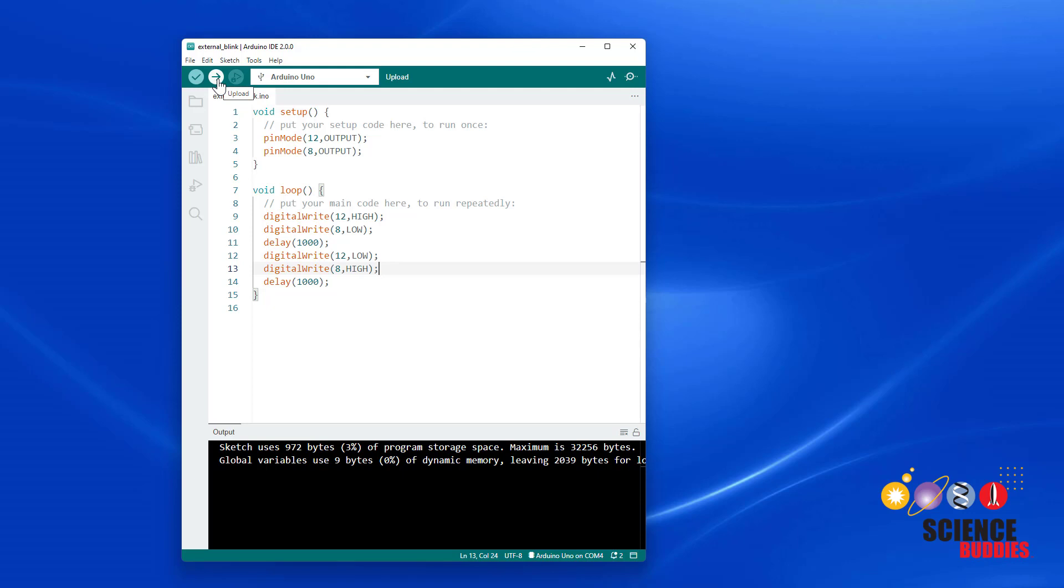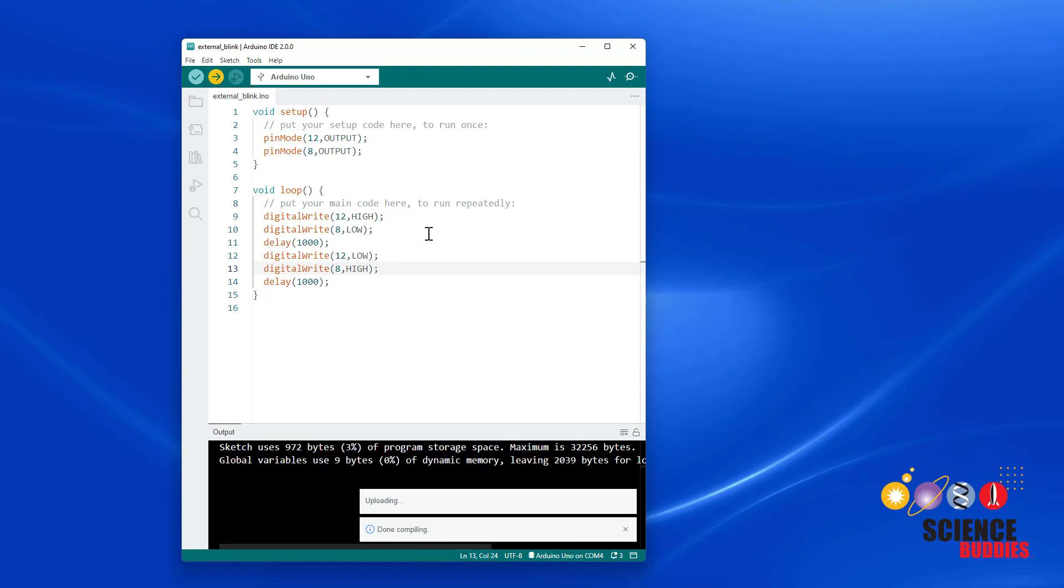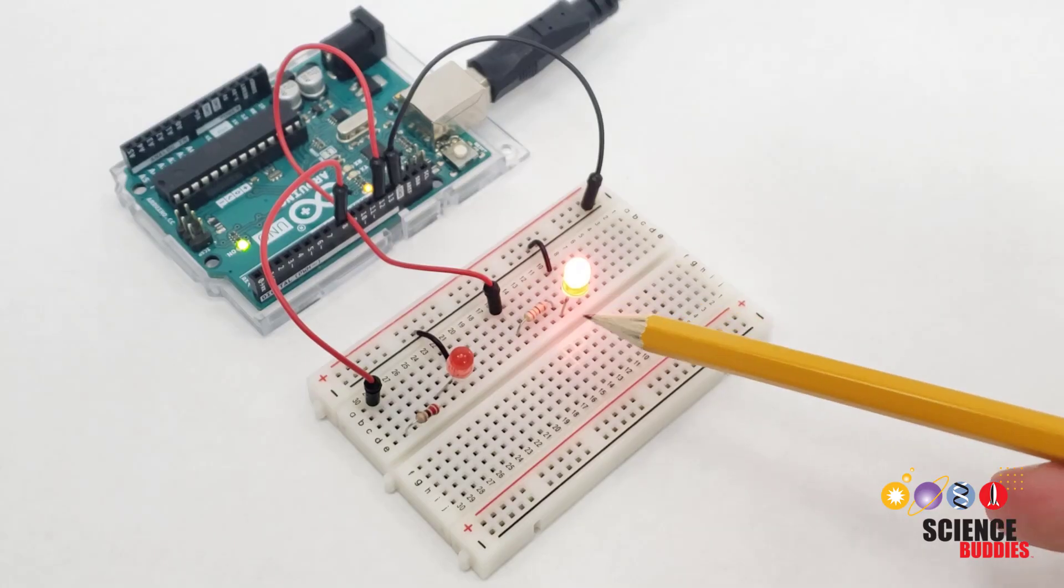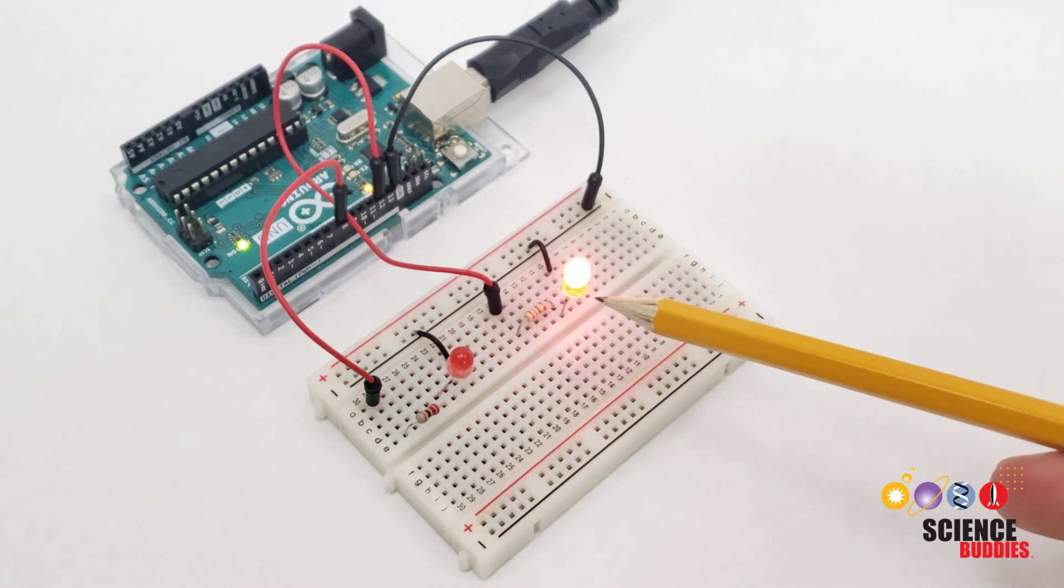Again, if I upload this, now the LEDs should blink out of sync. After uploading the new code, I can now see that the LEDs blink out of sync, sort of like the warning light at a railroad crossing.